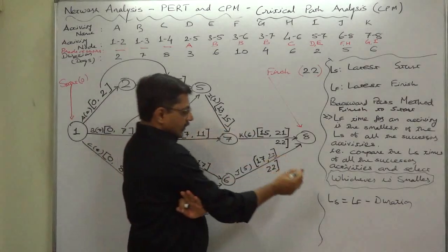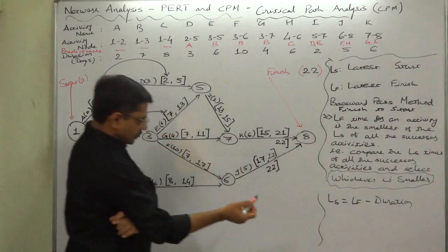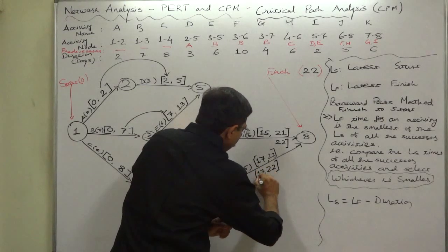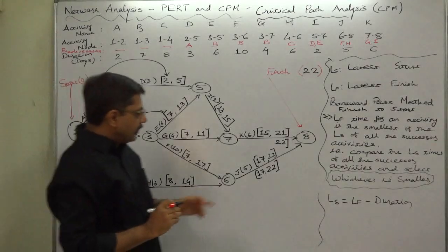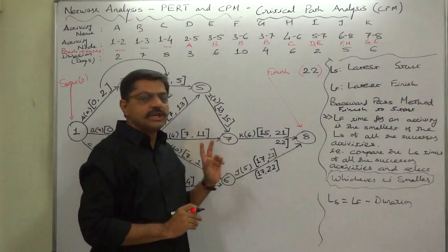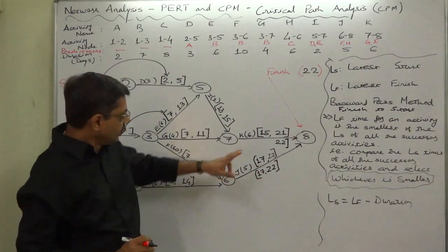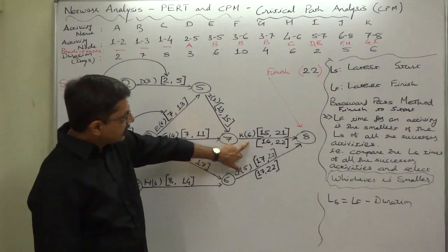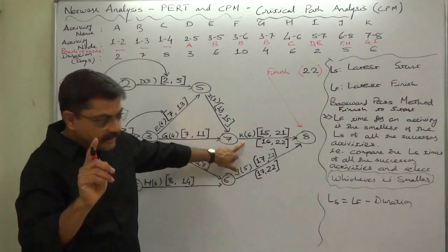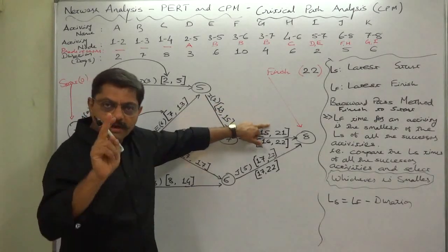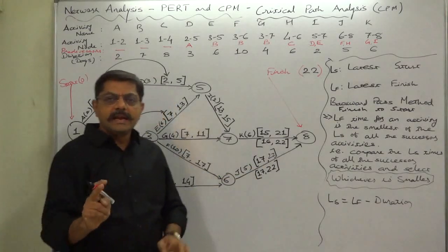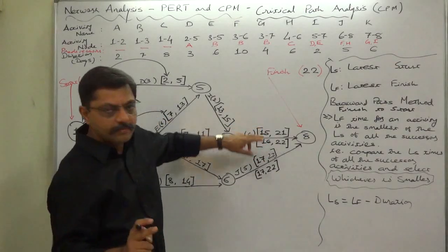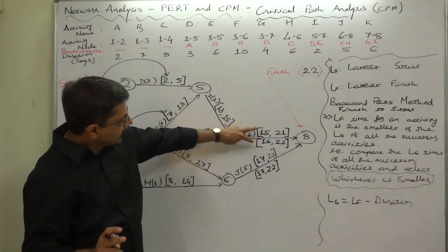Latest start time equals latest finish time minus duration. For activity J it will be 22 minus 5 = 17. By the 17th day we must start J - this is the interpretation. For activity K it will be 22 minus 6 = 16. This is the latest allowable start time for K, meaning instead of starting K on the 15th day, even if we start K on the 16th day we can complete the project in 22 days. We have a flexibility of one day.